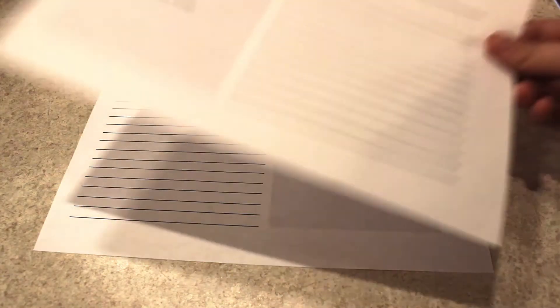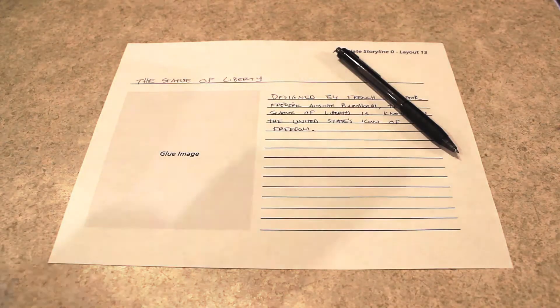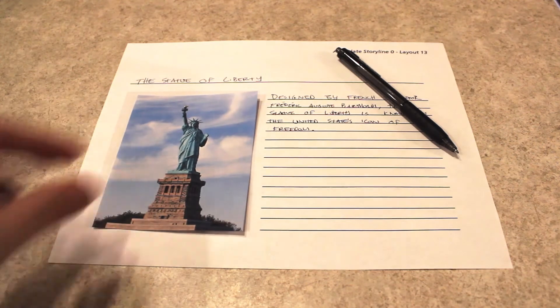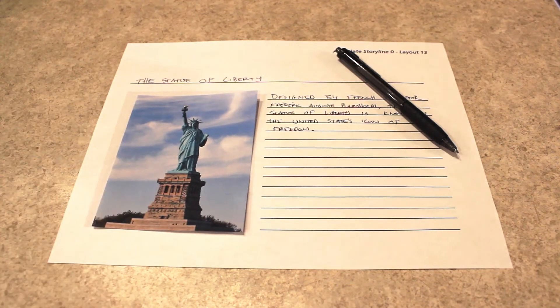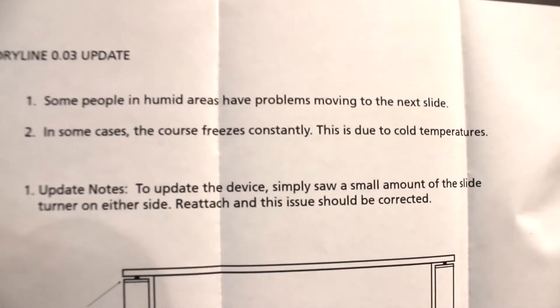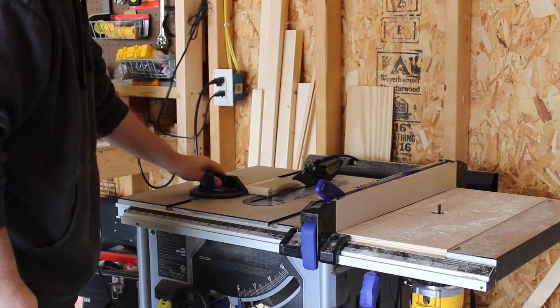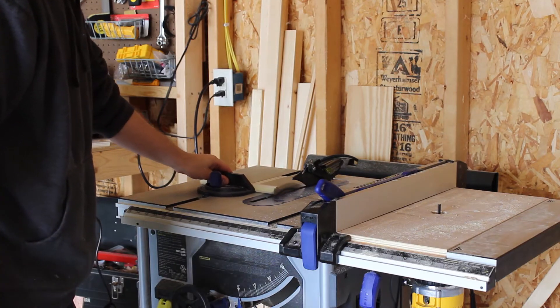It's also very easy to make your own slides in Storyline Zero. Simply choose one of the layouts Articulate provides, write in your text, attach a photo, send it off to Articulate, and in about 30 to 60 days you'll get your finished slides back. Even Storyline Zero had updates to bugs and little issues. You get that update in the mail, go to your table saw, cut a new piece, update, and you're all set.